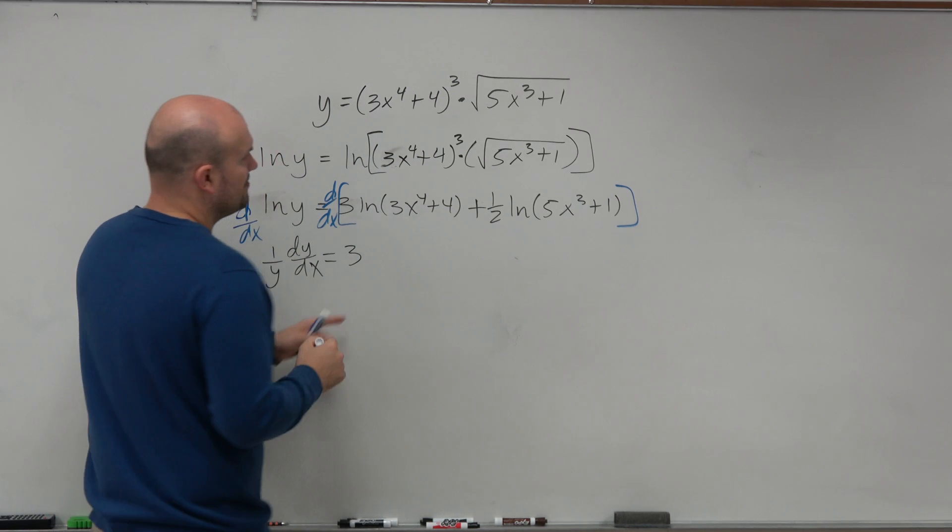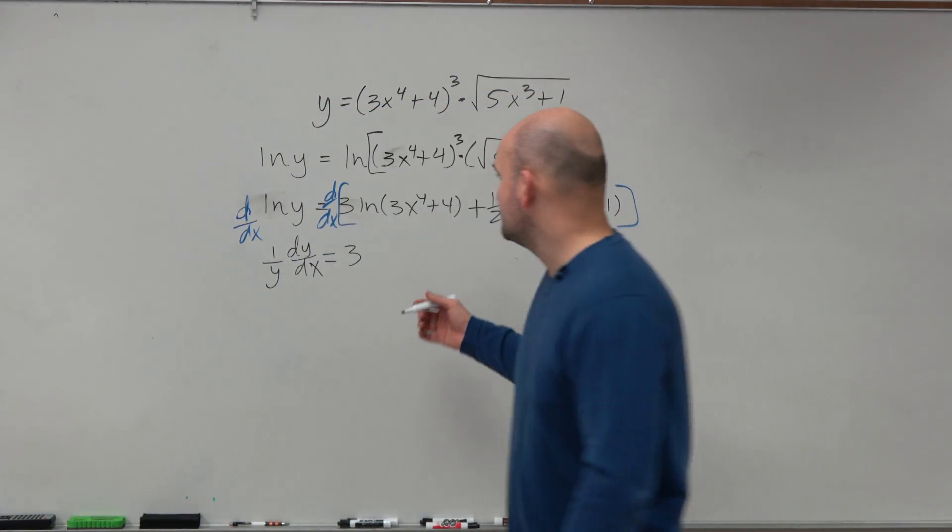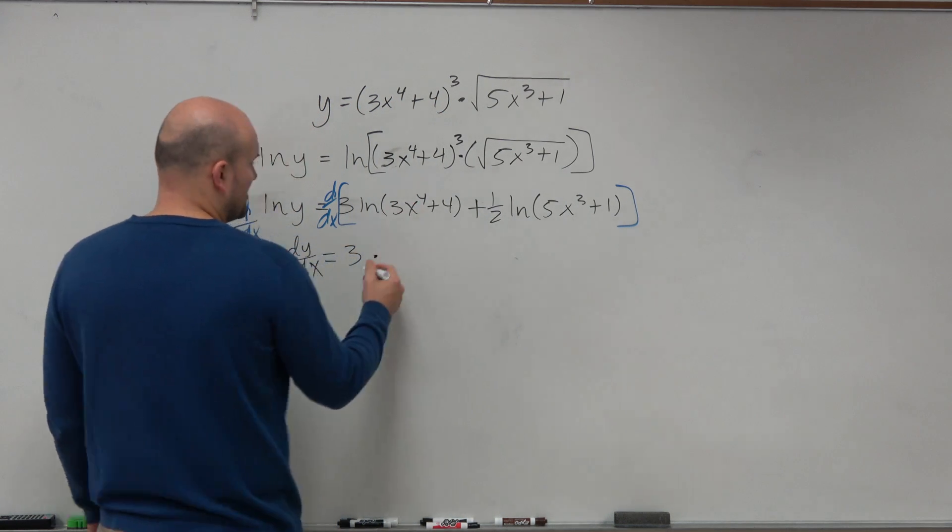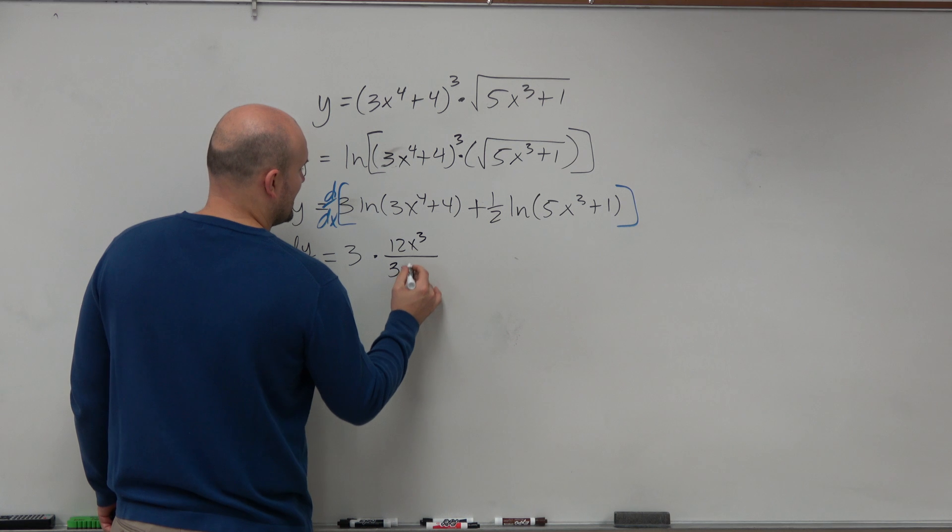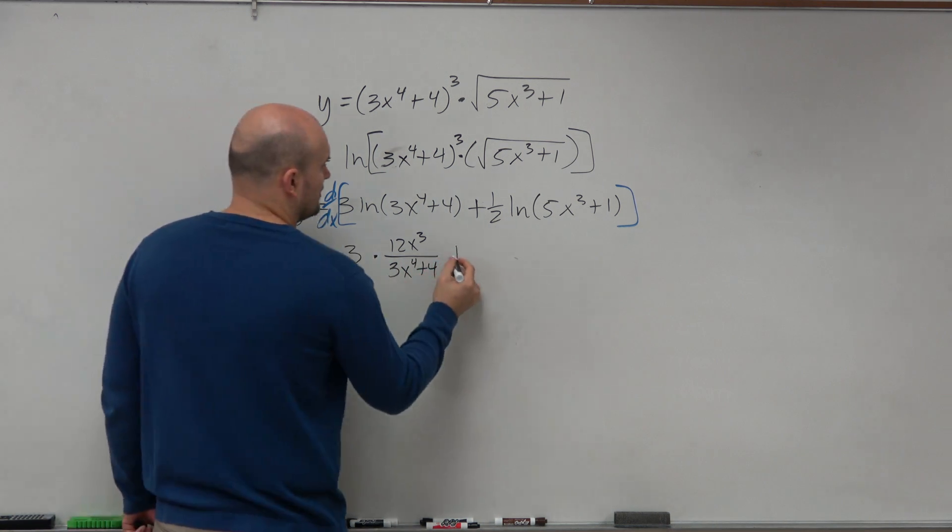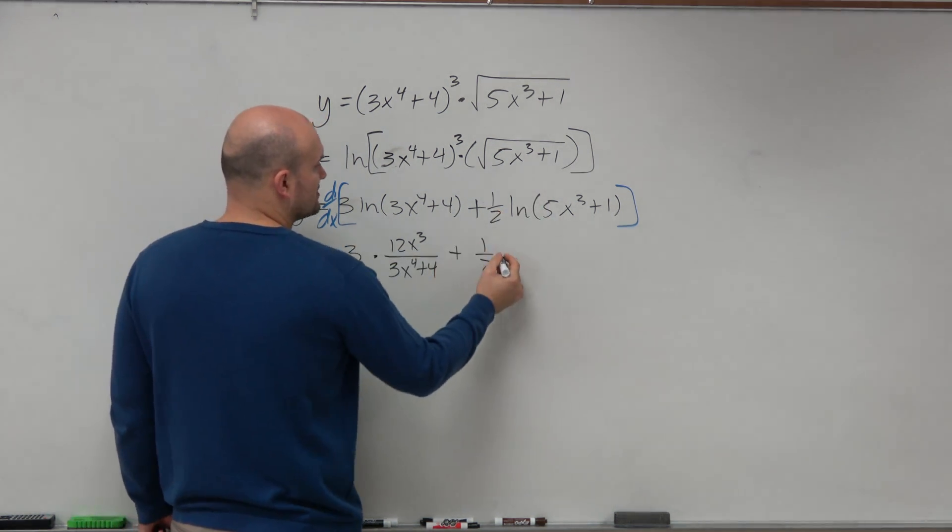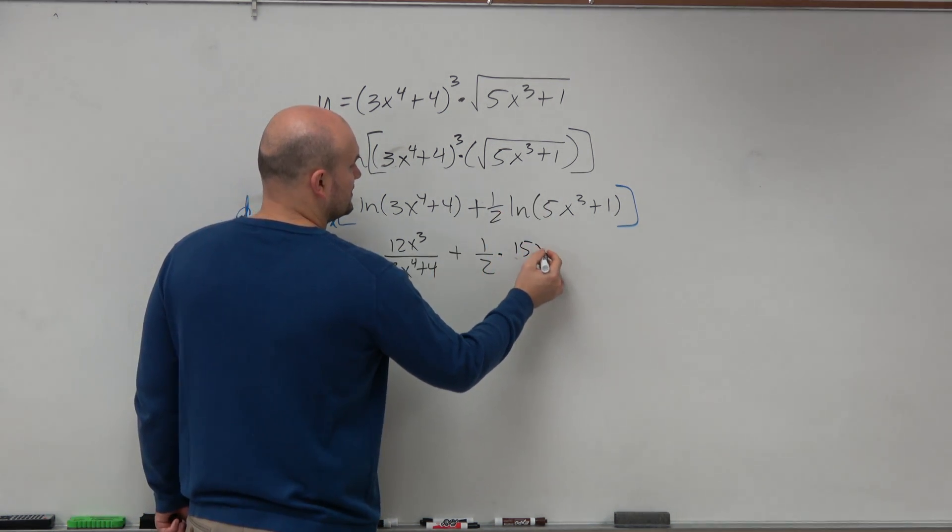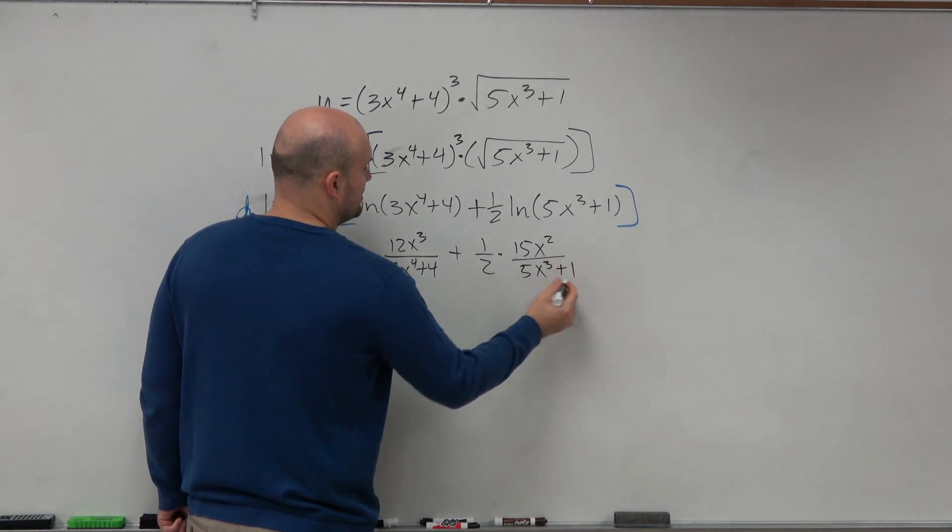Then over here, we're going to have 3. Remember, the quick way for ln is u prime over u. So I can basically just take the derivative here. It's going to be 12x cubed over 3x to the fourth plus 4. I'll come back and simplify this stuff later. Plus 1 half times u prime over u. So therefore, it's going to be 15x squared over 5x cubed plus 1.